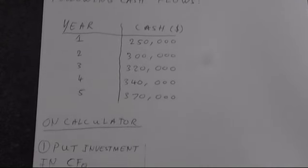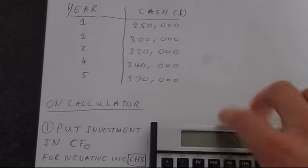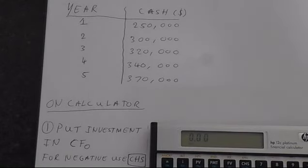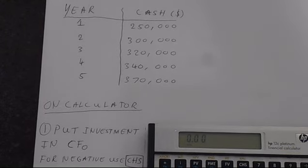So the first thing we have to do is put the investment in cash flow zero. This is like our start value. So turn on the calculator. Remember our investment was a million dollars, so we need to put a million into CF zero.